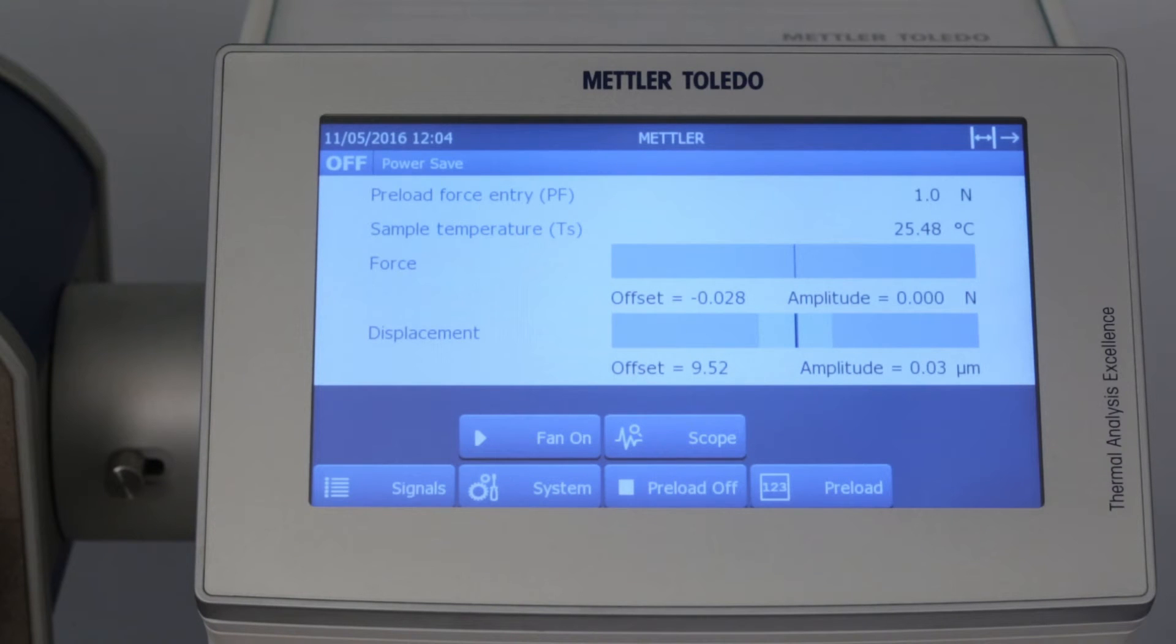By default, the preload force is 1 newton. If this is too small or too large for your sample, you can change it on the preparation screen.